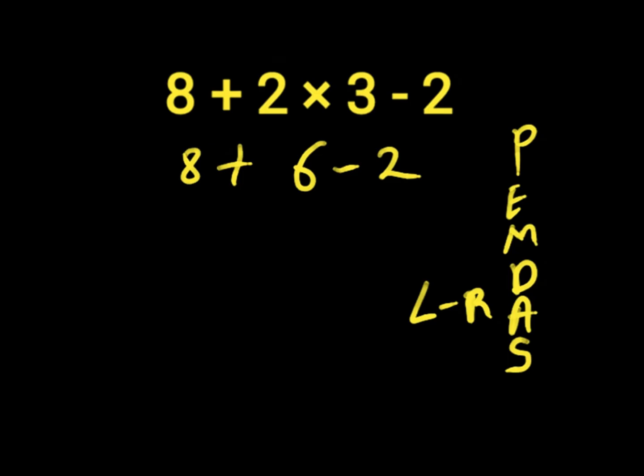We solve our addition next because addition and subtraction have equal priorities, so we work from our left to our right. So 8 plus 6 will give us 14. We have 14 minus 2. 14 minus 2 will give us 12. So 12 is the right answer to this expression.